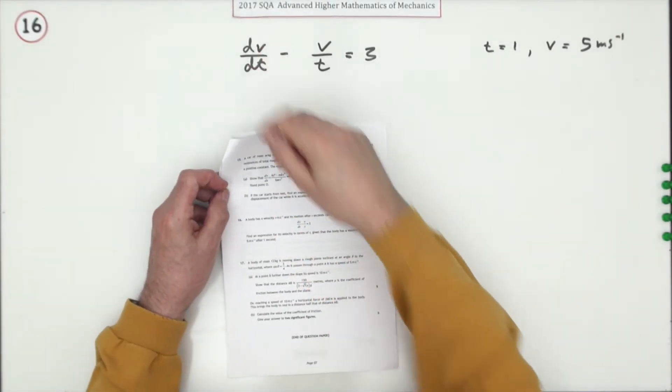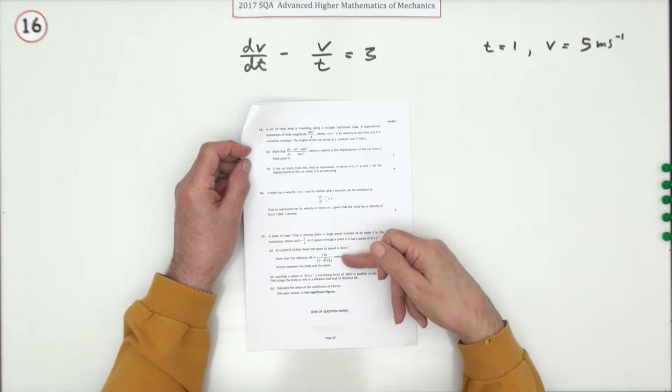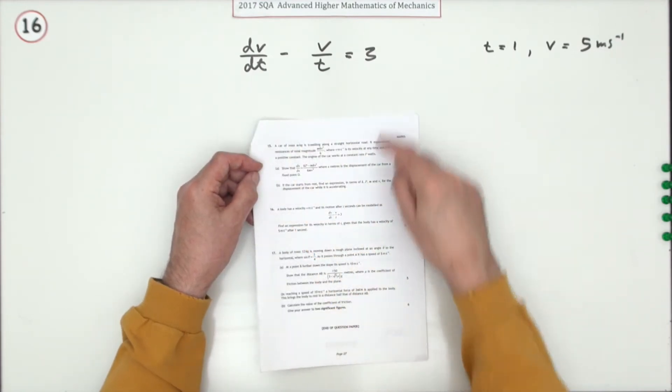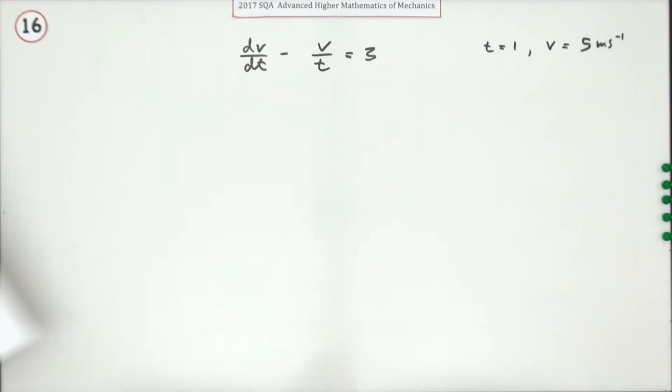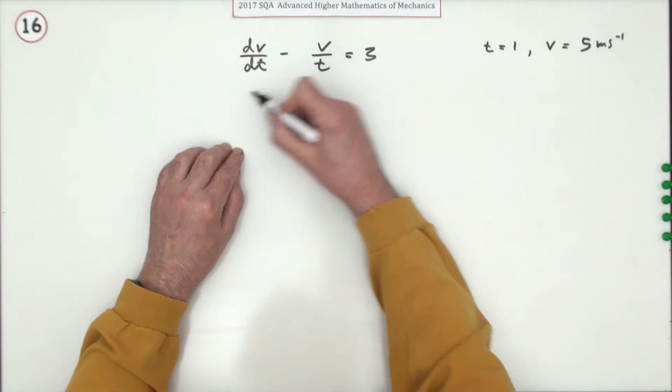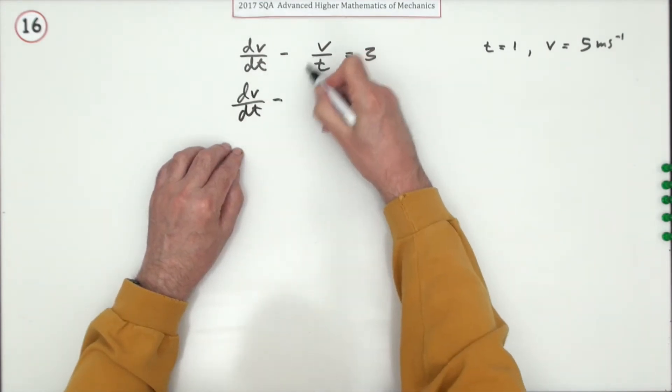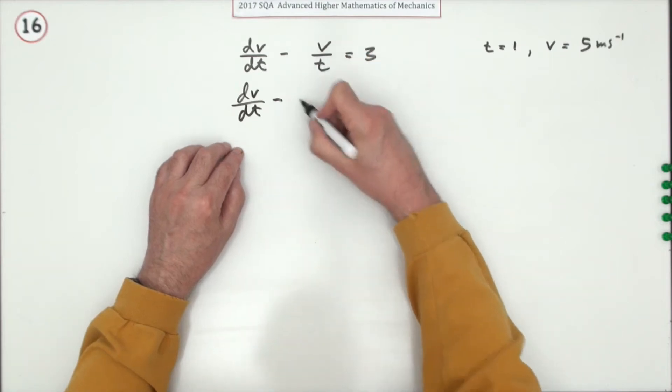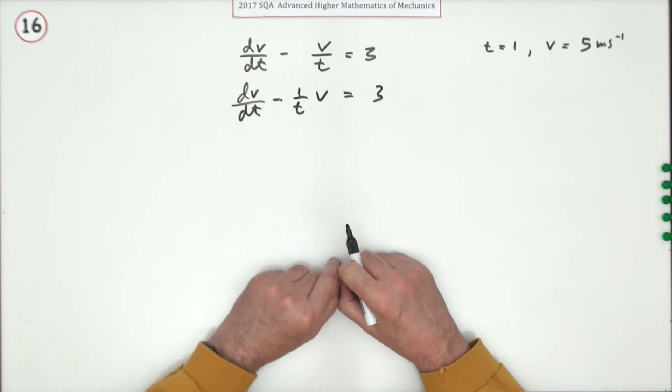Question 16 from the 2017 Mathematics and Mechanics five-mark question, second last question. It's a straightforward solve the differential equation, and it's one you should recognize. It'd be clearer if it was rewritten slightly like this: dv/dt, and take that function of t away from that, (1/t)v = 3.